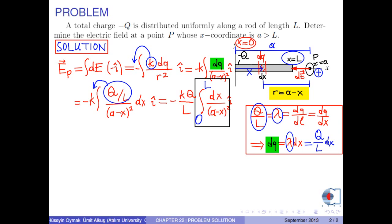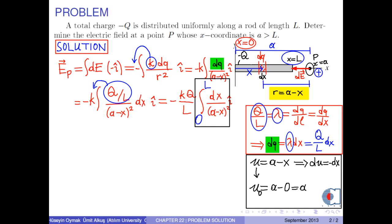In order to calculate the integral, for simplicity, let us change the variable. Let us introduce a new variable u as a minus x. Therefore, the differential du becomes negative dx. The limits of the integral become u₀ equals a and u_L equals a minus L. Now we can calculate the integral. The electric field becomes negative k times Q over L times the integral of negative du over u squared, î-hat, with limits a and a minus L.